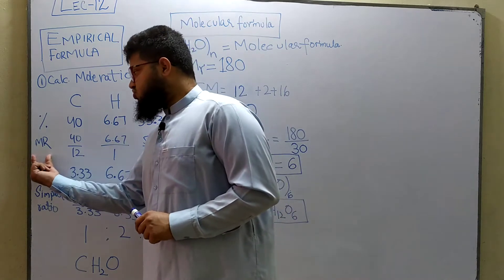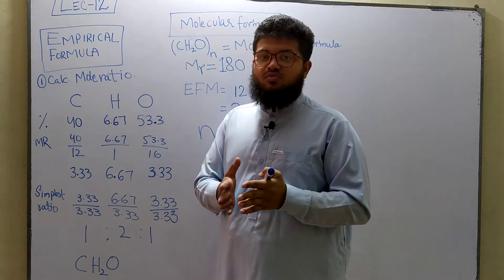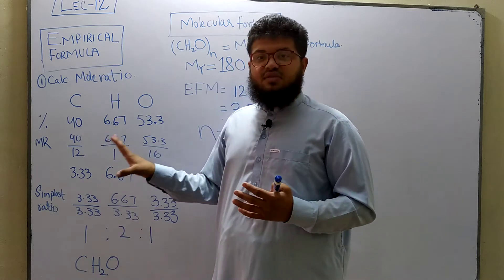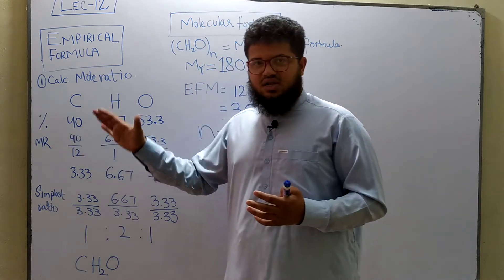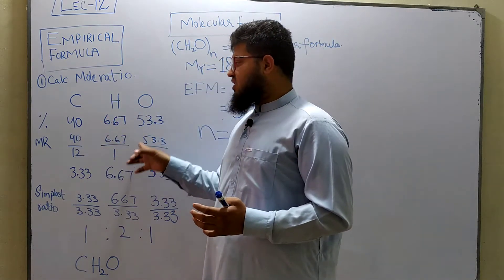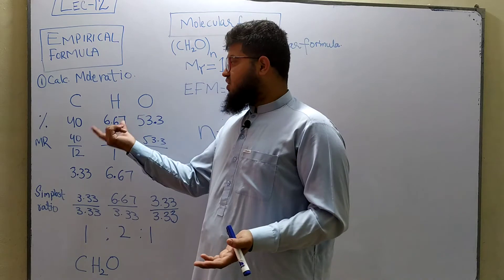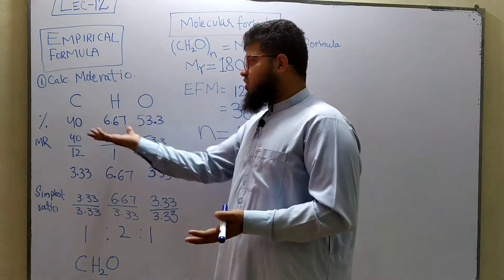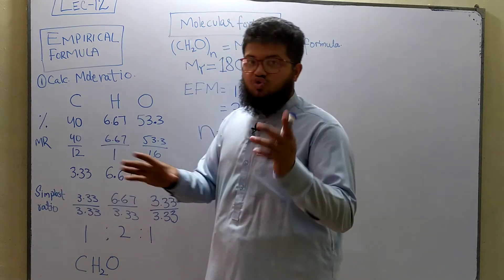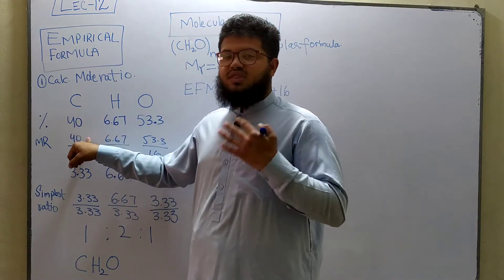The very first step is to calculate the mole ratio. Normally moles are calculated using given mass in grams divided by the molar mass, but here we don't have the mass — we have percentages. In the case of empirical formula calculation, you can directly use these percentages and divide them by the molar masses to get the mole ratios, because it's a ratio. Whether you convert percentages to grams or use them directly, you get the same ratio.